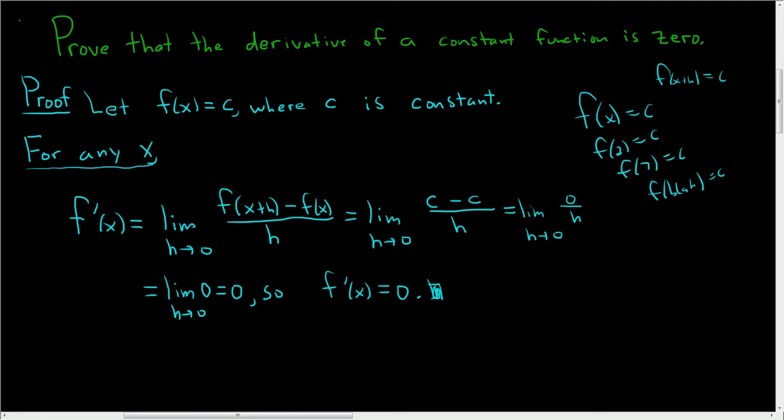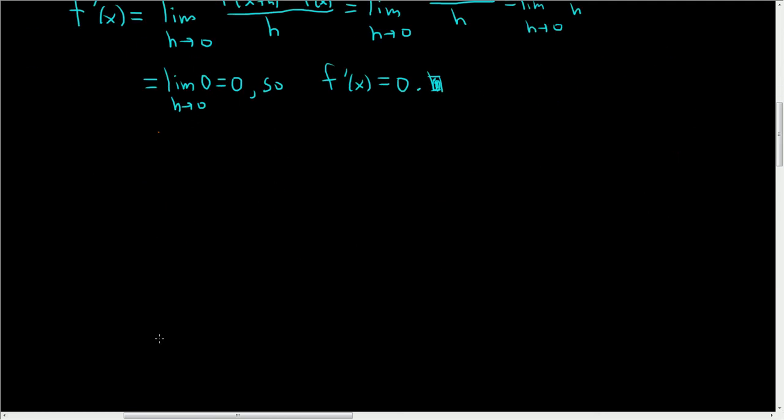Now why does this make sense? Let's try to think about it intuitively. So if we have a constant function, this will be the y-axis and this is the x-axis. And let's assume for the sake of just drawing a decent picture that c is positive. So there it is. There's our constant function f of x equals c.